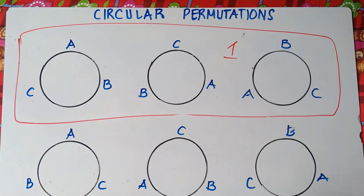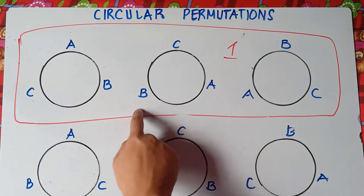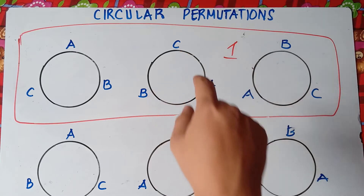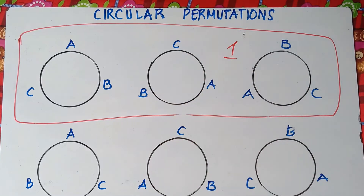So the best answer for that, if the teacher asks you why it is counted as one: it's because the positions are changed, but the arrangement is just the same. B is still on the right side of A and C is still on the left side of A.